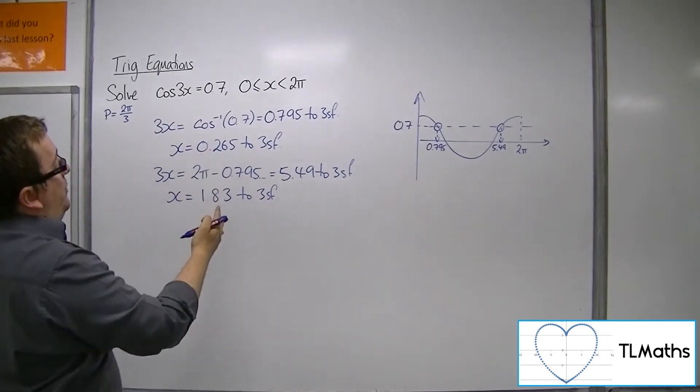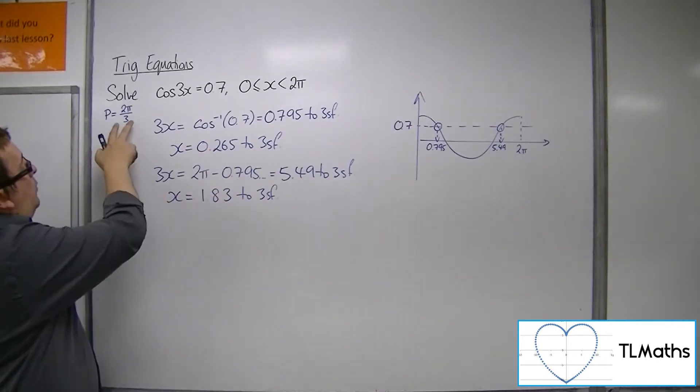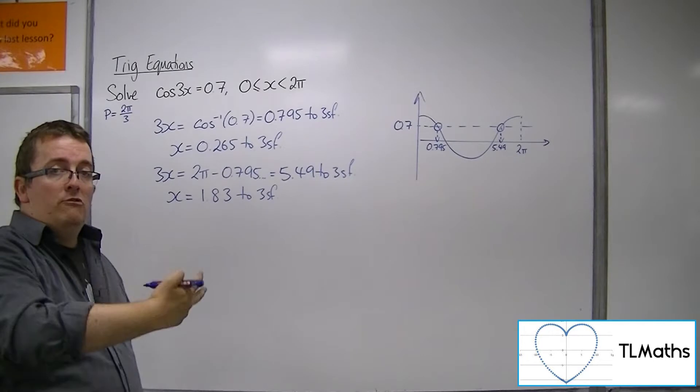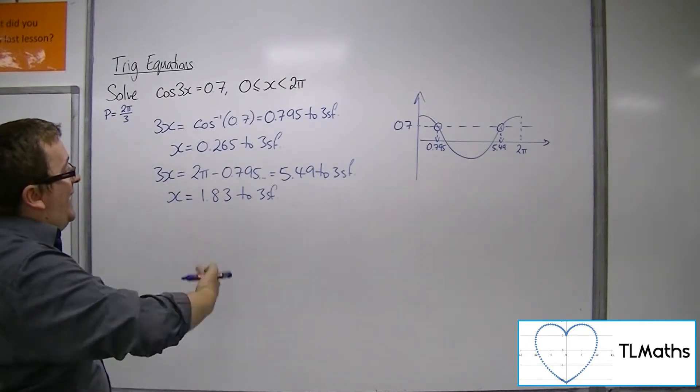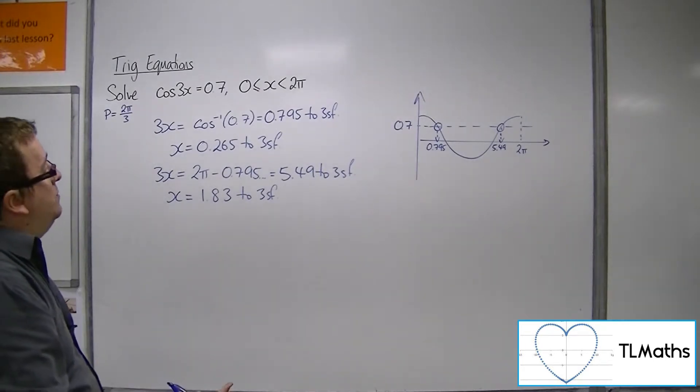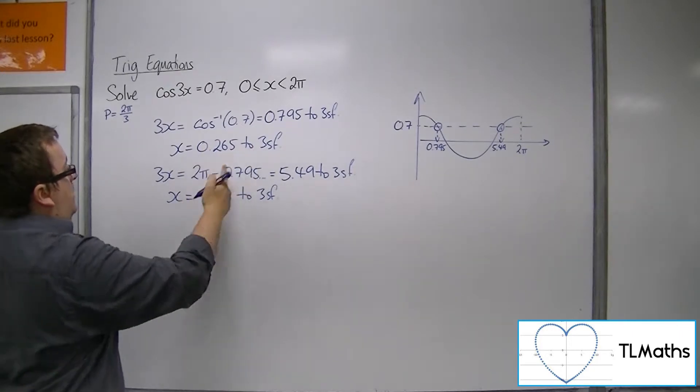These are two of the solutions to the problem, but we can add the period of the function to get any remaining solutions between 0 and 2π. So we can add 2π/3 to both of these.